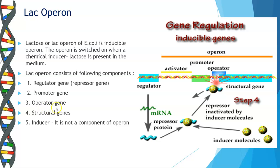The next component is the operator gene, which is located just adjacent to your structural gene. When the operator gene is turned on by an inducer, the structural genes produce an mRNA. These structural genes will produce an mRNA only when you have the operator gene which is turned on by an inducer.